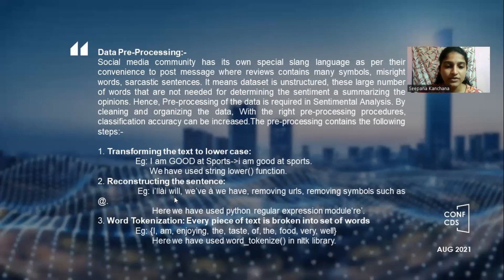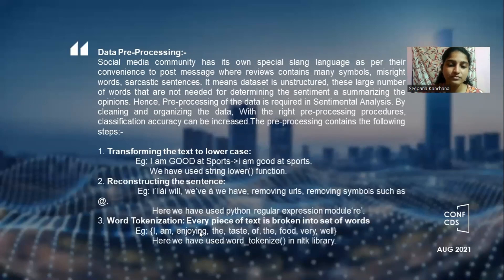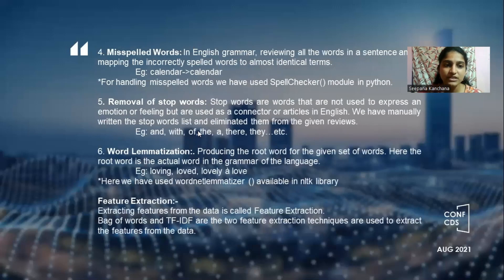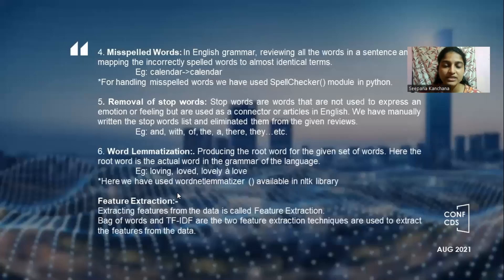For example, 'I'll' is converted to 'I will.' Third, word tokenizing — tokenizing simply breaks the text into a set of words, converting all sentences into individual words. Fourth, handling misspelled words by correcting them. Fifth, removal of stop words — stop words are words that do not carry any sentiment and are not useful for sentimental analysis, so we remove them. Sixth, word stemming, which produces the root word found in the dictionary — the correct base form of a word.